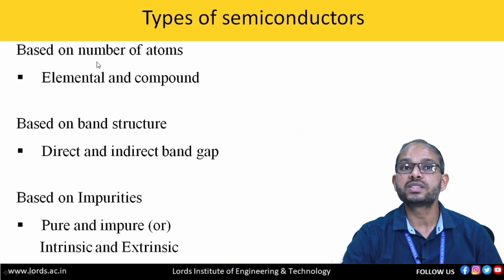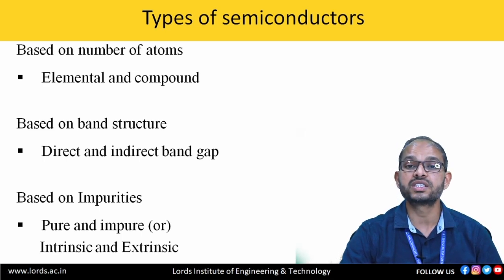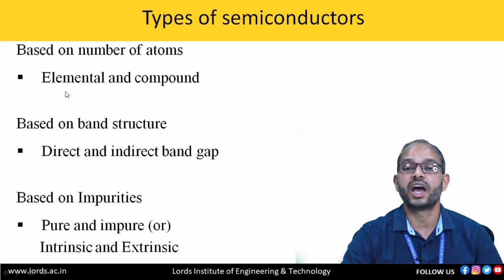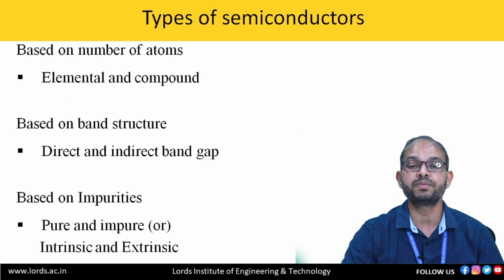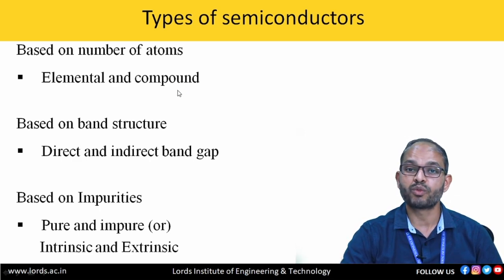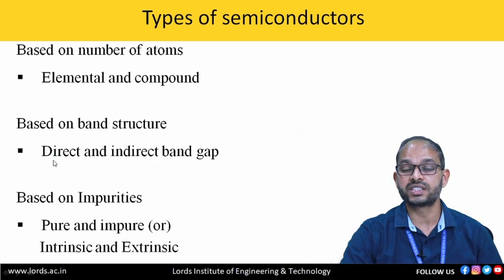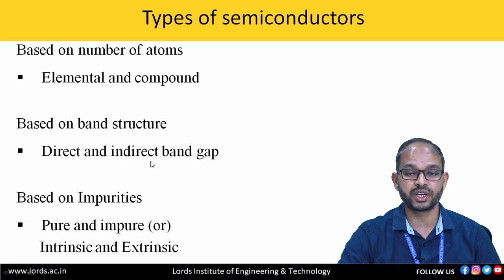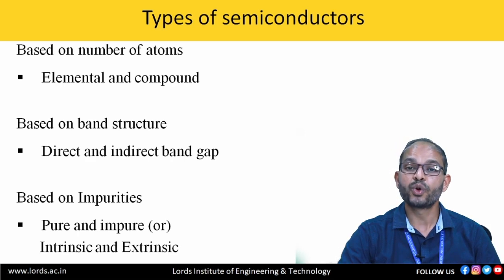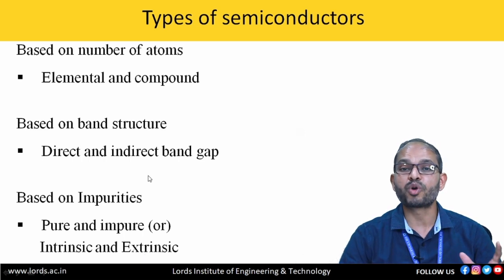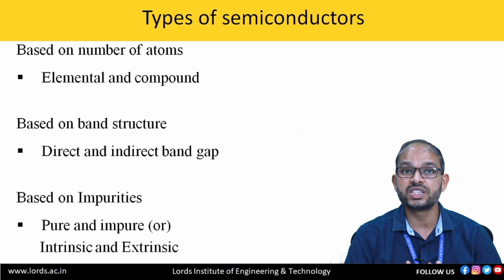Based on the number of atoms, semiconductors are classified into two types: elemental semiconductors, which contain only one type of atom, and compound semiconductors, which contain more than one atom. Based on band structure, we have direct band gap and indirect band gap semiconductors. Based on impurities, semiconductors are classified into two types: pure and impure semiconductors, also named intrinsic and extrinsic semiconductors.